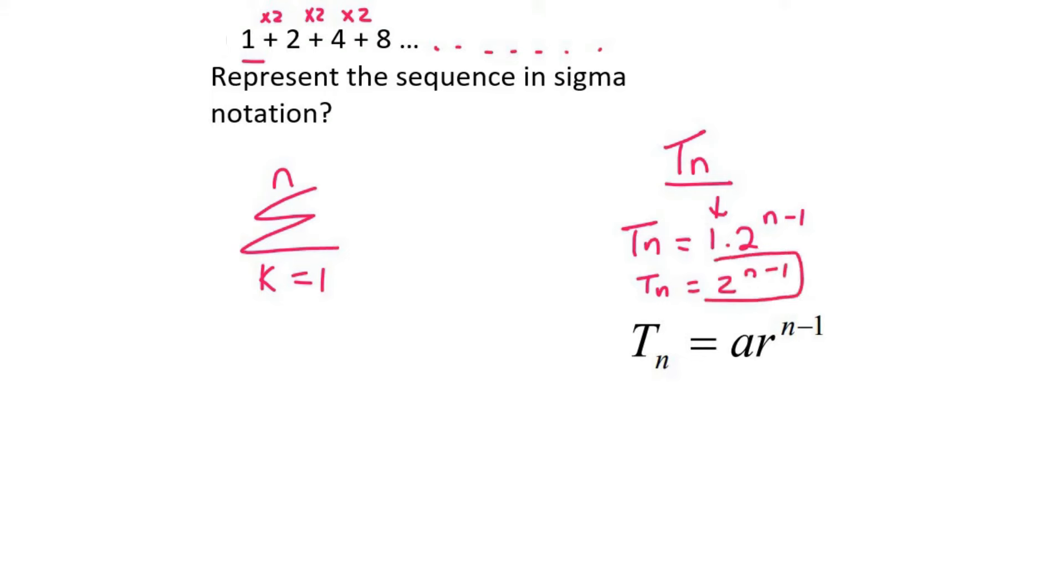You then take this tn and you put it over here, but don't write it as an n, rather leave it as a k. The reason is that these two always need to match. And that is it. That's how you represent something in sigma notation.